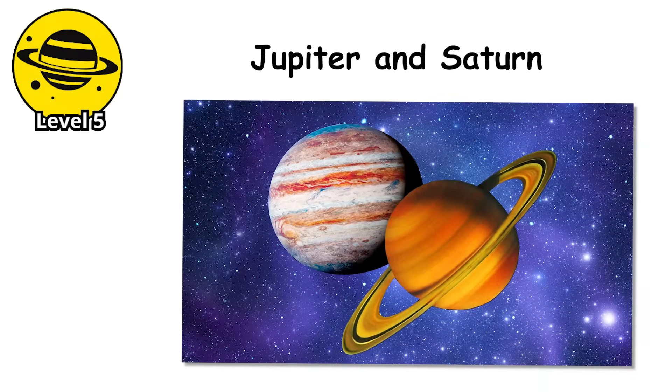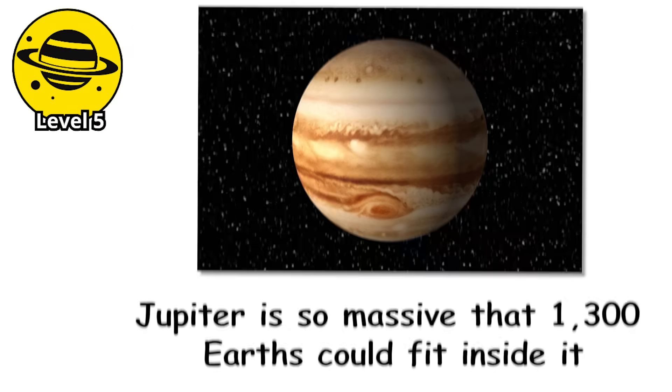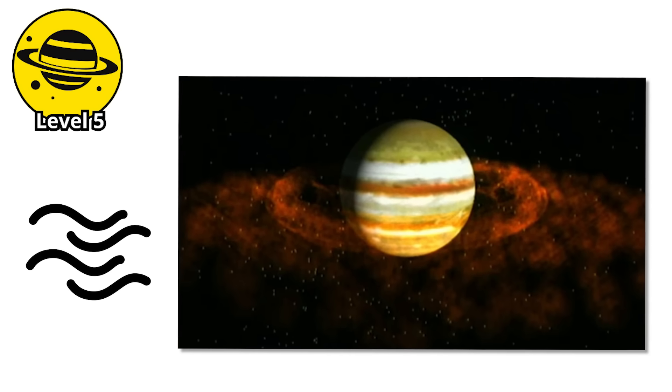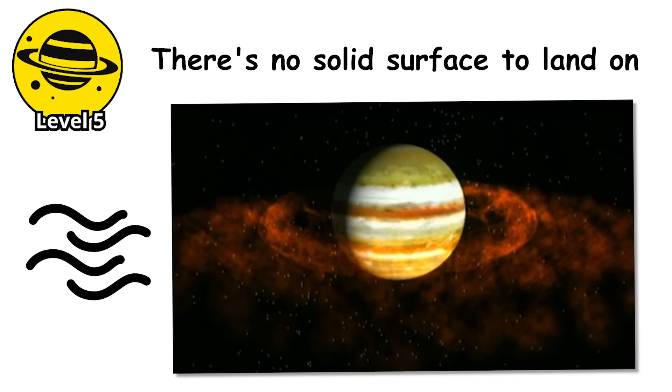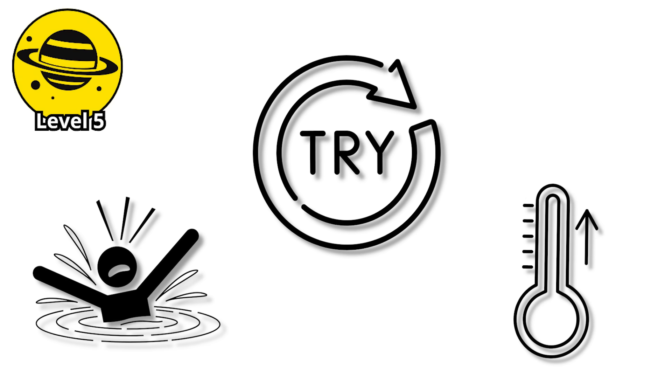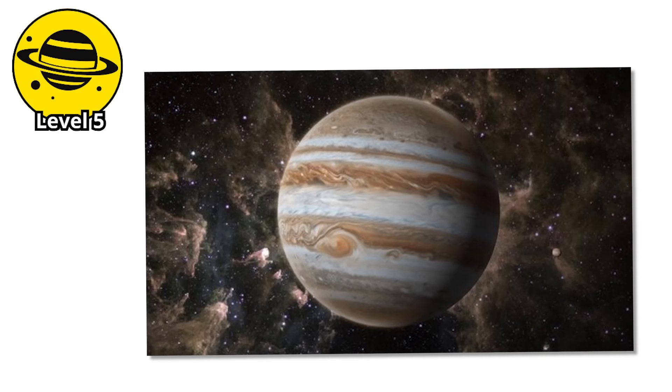Level 5. Jupiter and Saturn, the undisputed heavyweights of our solar system. Jupiter is so massive that 1,300 Earths could fit inside it, and yet it's still mostly just atmosphere. There's no solid surface to land on. If you tried, you'd just keep sinking, the pressure mounting, the temperature rising, until you were crushed and incinerated somewhere in the depths of an endless swirling atmosphere.